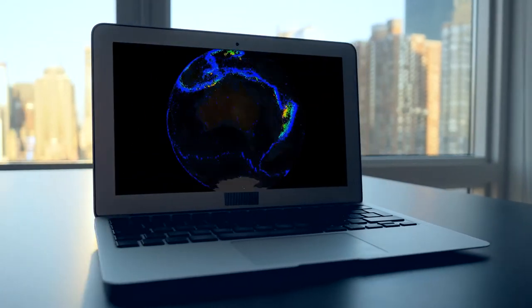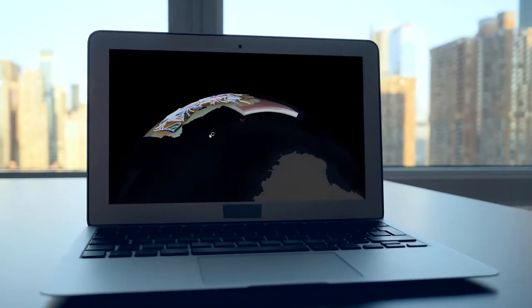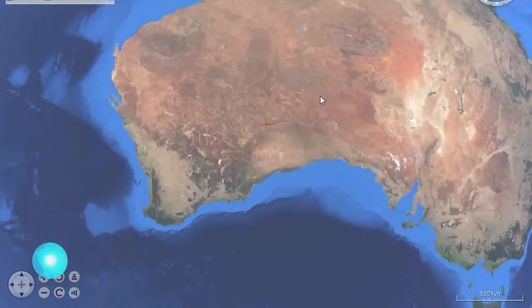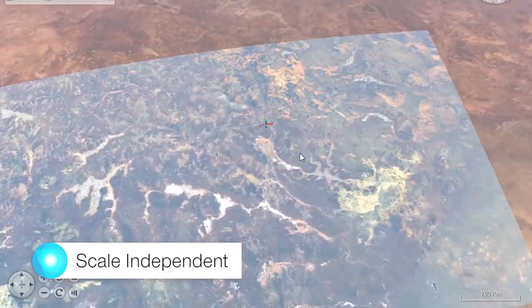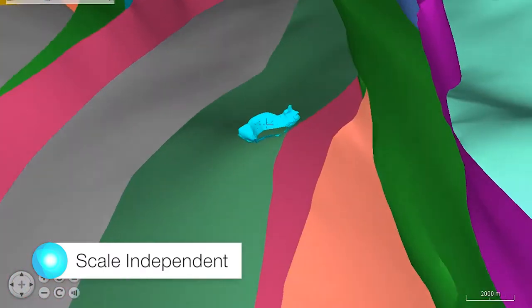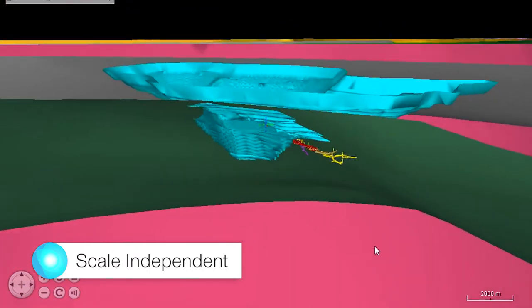Discover and visualize three-dimensional earth science data easier than ever before with EarthSci. EarthSci is scale-independent to allow you to navigate from global down to regional and site-specific data in real-world coordinates.